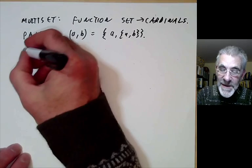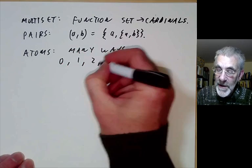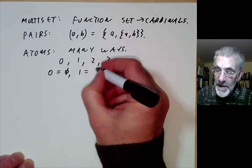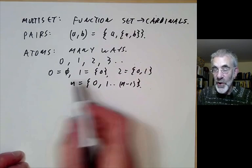Atoms can be done in several ways. For example, one common way of encoding the natural numbers as atoms is you just state 0 to be the empty set. 1 is the set containing 0, 2 is the set containing 0, 1 and in general n you encode as the set {0, 1, up to n-1}.